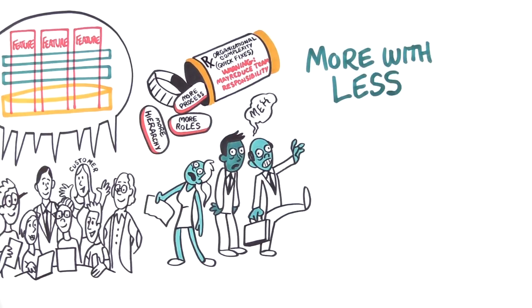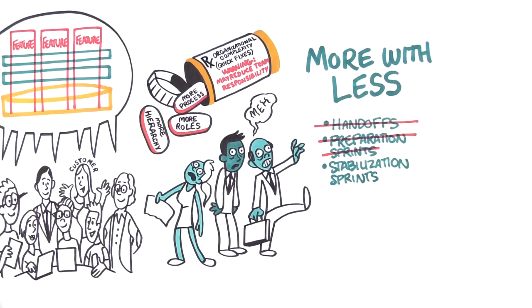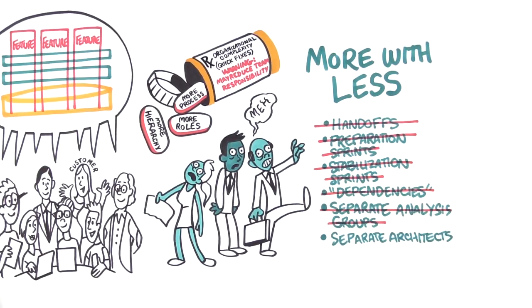More with less. More with less also discourages things like handoffs, preparation sprints, stabilization sprints, so-called dependencies, separate analysis groups, separate architects, and separate queues for each team.